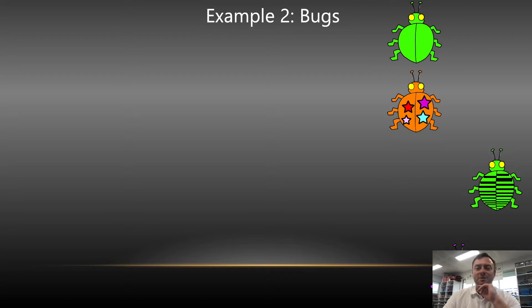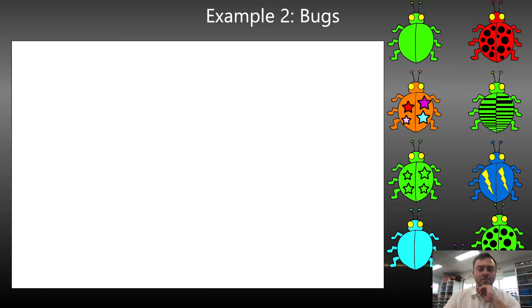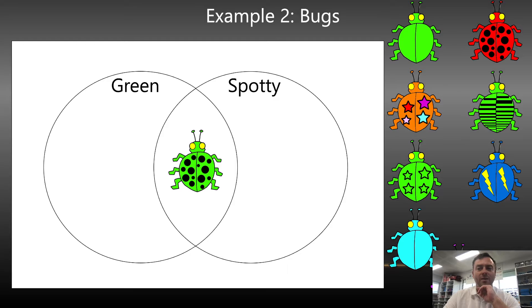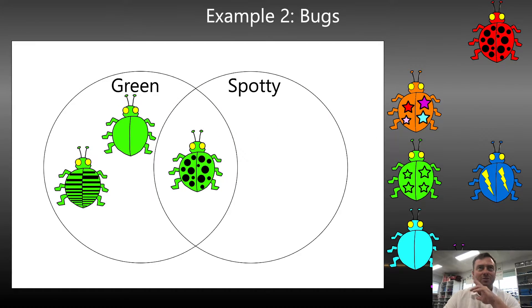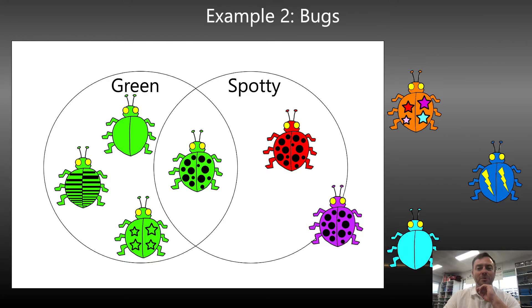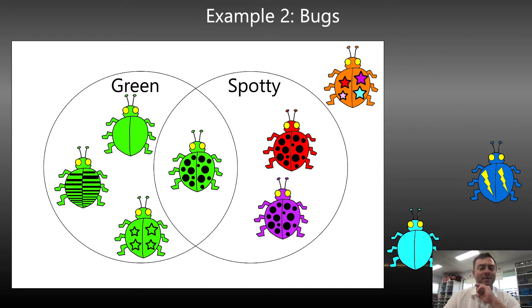To do this with bugs — if we did everything that's green and spotty, there's only one bug that's green and spotty. Then if we had all the things that are just green but not spotty — notice how I'm starting to use some words here — so green and not spotty links into that. And then everything that's spotty and not green goes over here, which is the red and the purple. And everything that's not green and not spotty is everything around the edge.